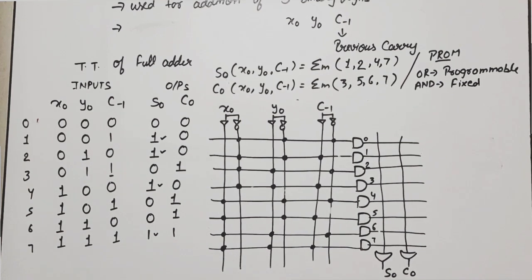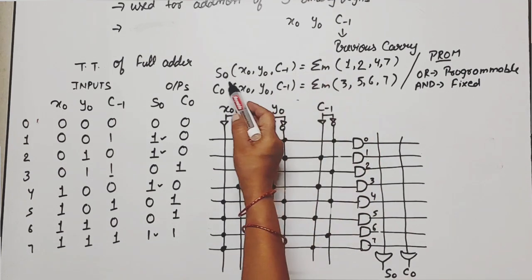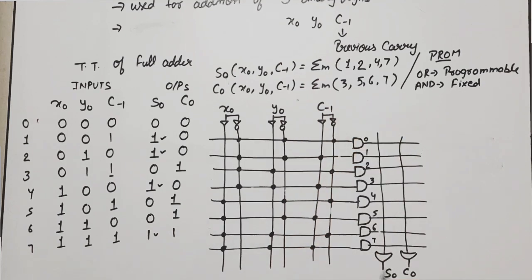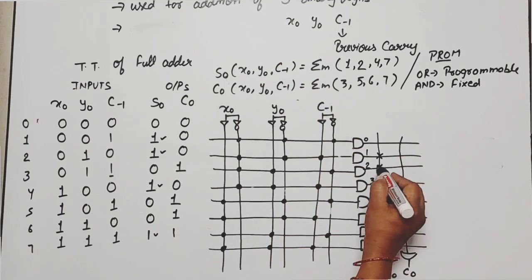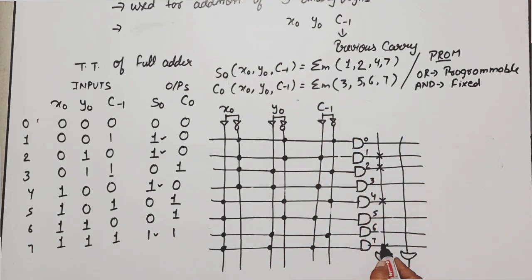Now output side means for OR array, there is programmable connection. Means we show fuse. How do we show fuse? Crossed. Now where are we connected? Sum s0 is 1, 2, 4, 7. Means 1, 2, 4, and 7.